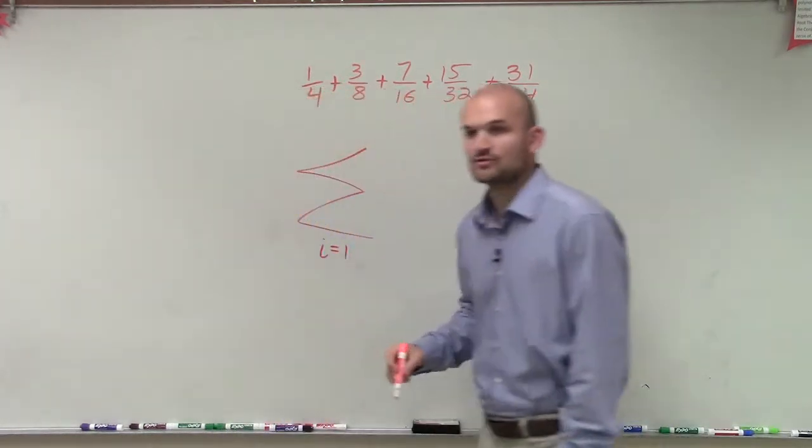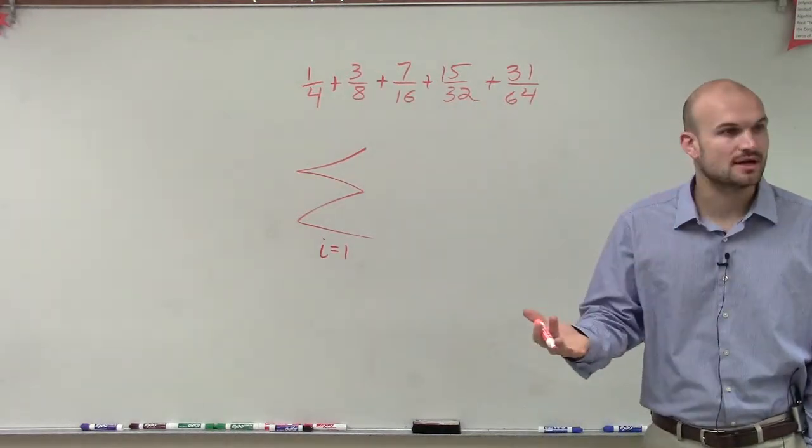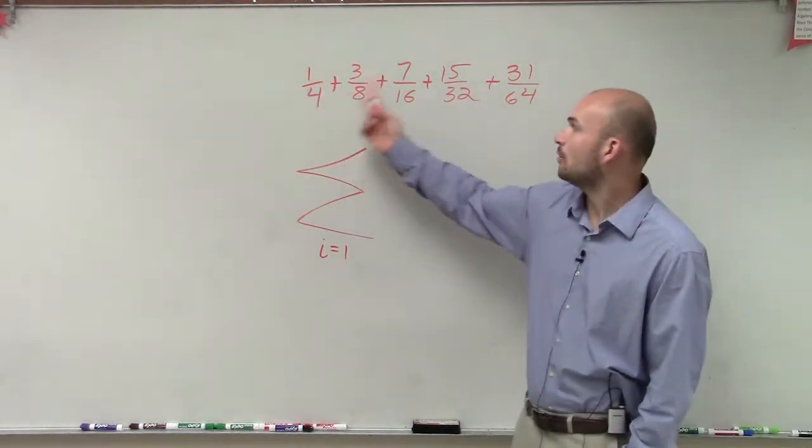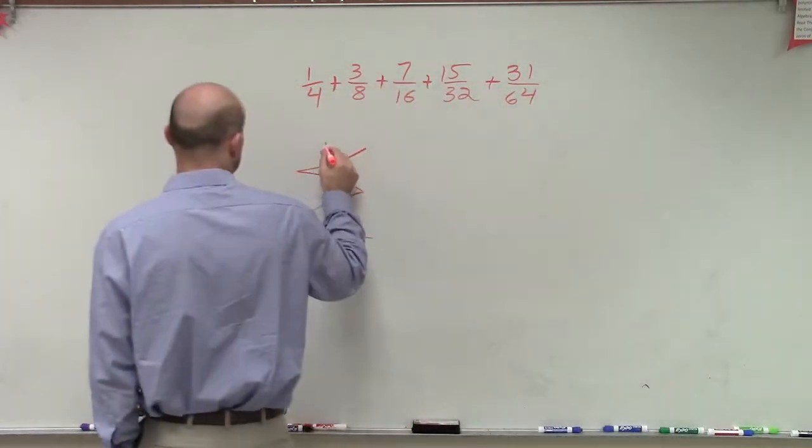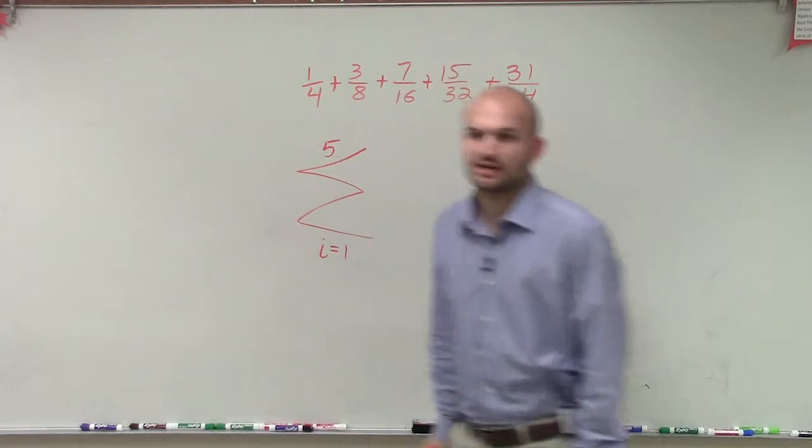All right, and if i equals 1, then we need to determine how many terms are we using. So we're using 1, 2, 3, 4, 5. So we can say the terminal term is going to be at 5.